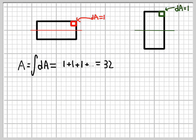If we evaluate the integral, then what we find is we add up all the little pieces of area, which are each of value 1, and we get 32 in both cases, which is what we know intuitively.